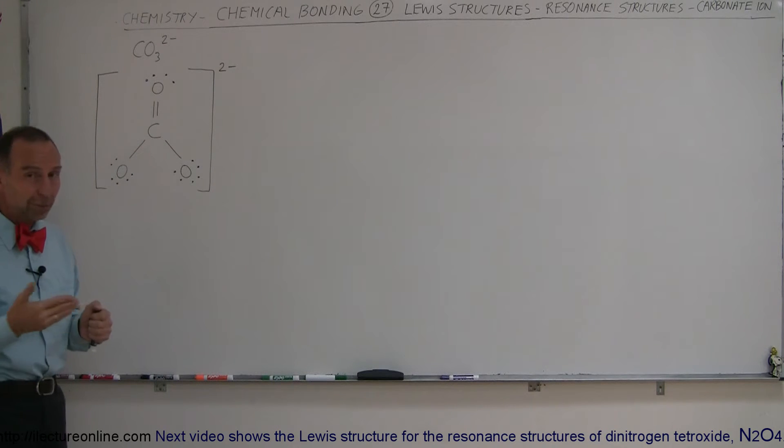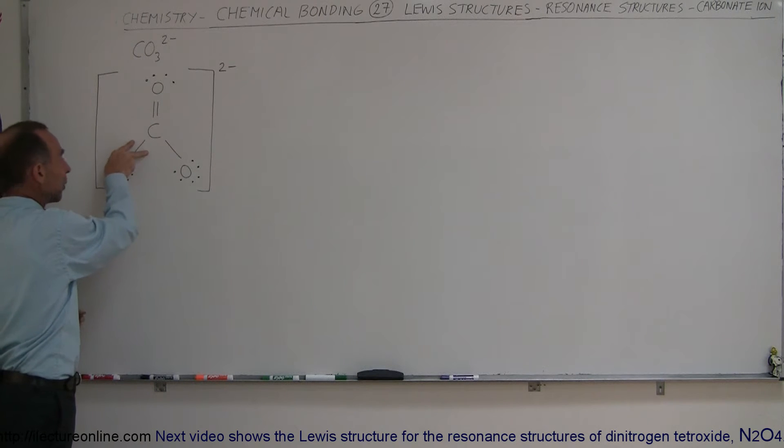Since there's three possibilities, it'll be one-third of the time. This is where you'll find the double bond, then you'll find it here one-third of the time, and you'll find it here one-third of the time.